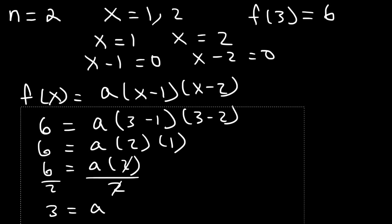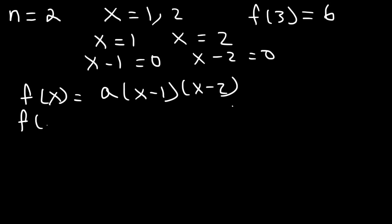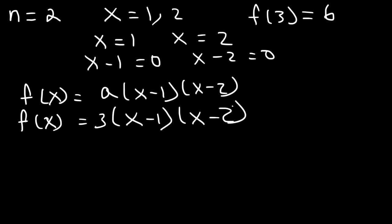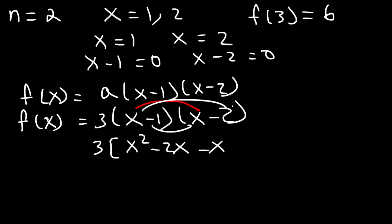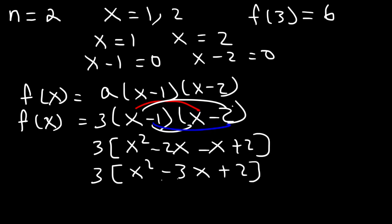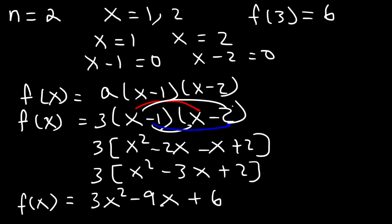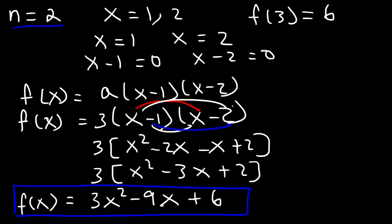So therefore, the function in its factored form is 3 times x minus 1 times x minus 2. But now let's write it in its standard form. So let's FOIL: x times x is x squared, x times negative 2 is negative 2x, negative x, and negative 1 times negative 2 is positive 2. Combining like terms, negative 2x minus x is negative 3x. Distributing the 3 gives 3x squared minus 9x plus 6. So this is the polynomial function with a degree of 2.